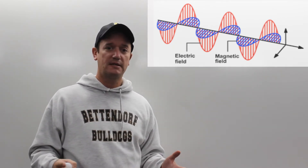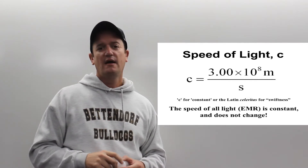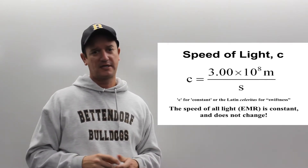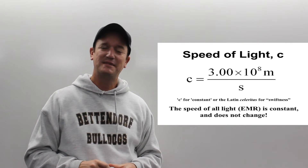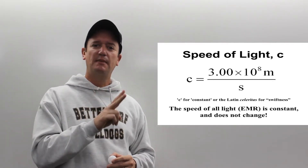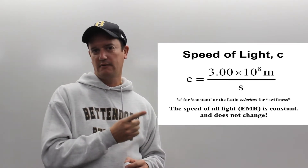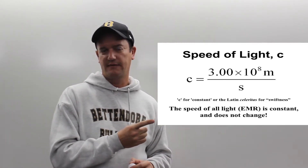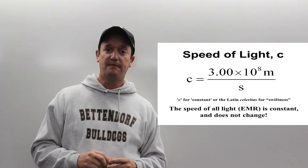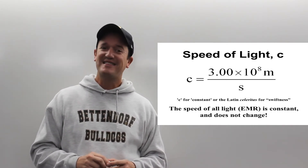All of the waves I'm going to talk about today, every single one, travels at the same speed — the speed of light. The speed of light is fast: 300 million meters per second, or 3×10⁸ m/s. There are probably two numbers in this class I want you to memorize: one is g, 9.8 m/s² for acceleration due to gravity, and the second is the speed of light, 3×10⁸ m/s.